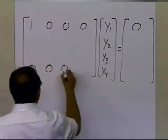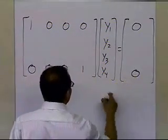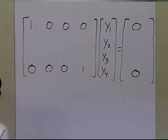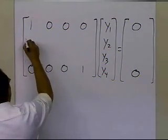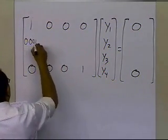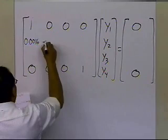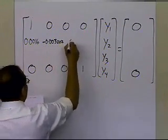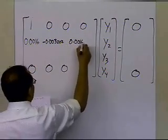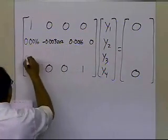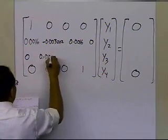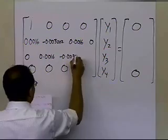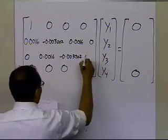The last equation will be for the last node, where y4 equals 0. The other two equations I get by making the calculations: 0.0016, minus 0.003202, 0.0016, and then 0. And here I get 0, 0.0016, minus 0.003202, and 0.0016.